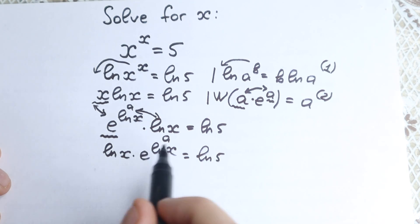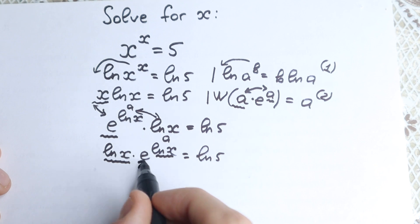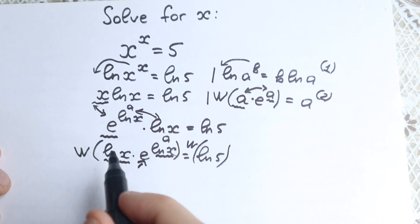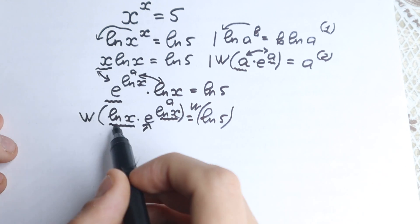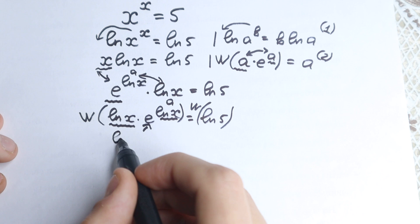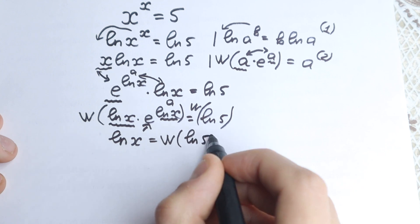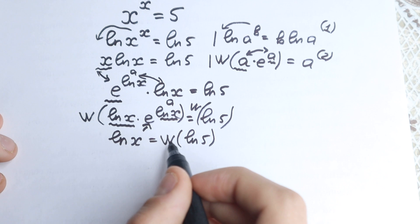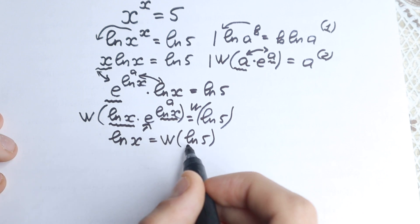We can now apply the Lambert W function, because we have the same expression in both places and we have e. Apply Lambert W to the left hand side and of course to the right hand side as well — we need to do this on both sides. The Lambert W of this expression equals a, and in our case a equals natural log x. So on the left hand side we get natural log x, equal to Lambert W of natural log 5 on the right hand side. The right hand side is a constant, which is great.